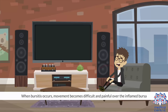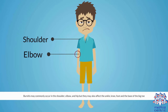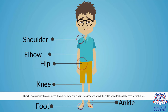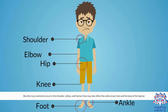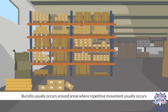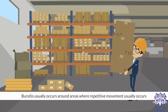When bursitis occurs, movement becomes difficult and painful over the inflamed bursa. Bursitis may commonly occur in the shoulder, elbow, and hip, but it may also affect the ankle, knee, foot, and the base of the big toe. Bursitis usually occurs around areas where repetitive movement takes place.